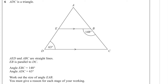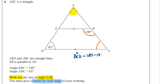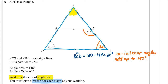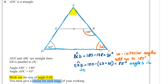Question 6. ADC is a triangle. AED and ABC are straight lines. EB is parallel to DC. Angle EBC is 148 degrees and angle ADC is 63 degrees. Work out the size of angle EAB, giving a reason for each stage. Angle BCD is co-interior with EBC, so angle BCD equals 180 minus 148 equals 32 degrees, because co-interior angles add up to 180. Since ADC is a triangle and angles in a triangle add up to 180, angle EAB equals 180 minus 63 minus 32 equals 85 degrees.